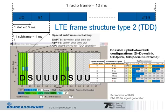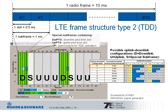The downlink and uplink pilot time slots are also used for regular data transmission, though they are shorter due to the special subframe configuration. The gray subframes in the screenshot represent uplink transmissions available in configuration 0. For TDD, Layer 1 and Layer 2 downlink control channels are defined at the beginning of each subframe, and primary and secondary synchronization signals along with the physical broadcast channel PBCH are also defined.